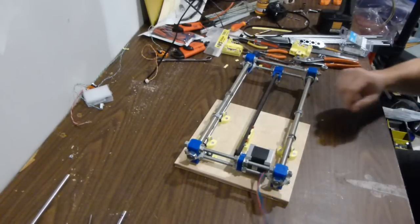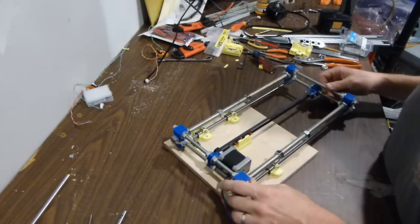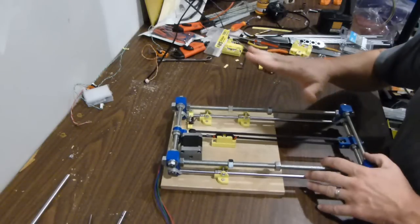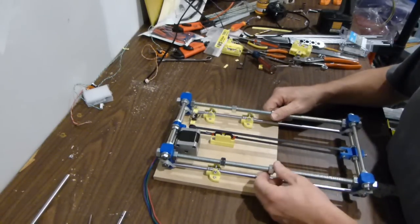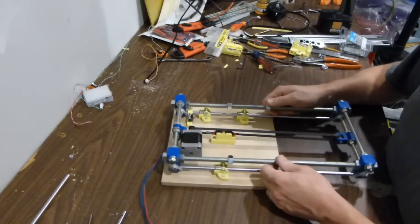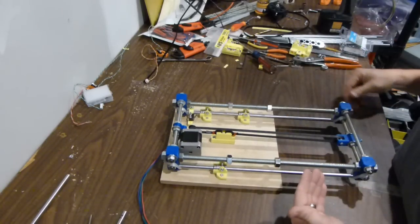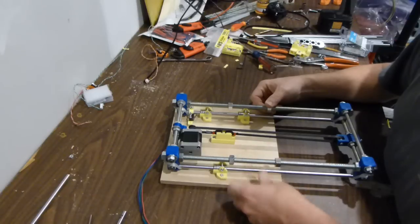Okay, so the Prusa i3. This is the y-axis. I've got the y-axis pretty much all assembled here. It's pretty easy to see what's going on here. I'm just going to go through the build order.